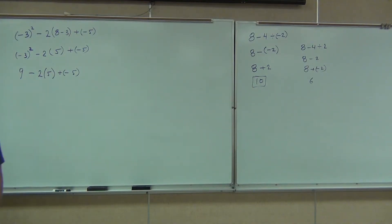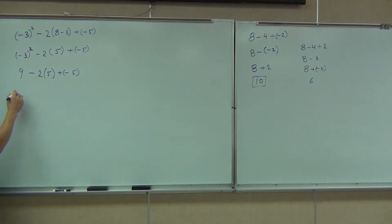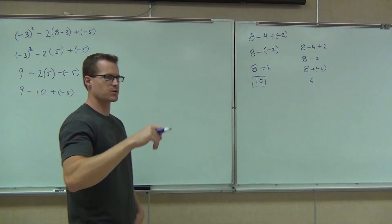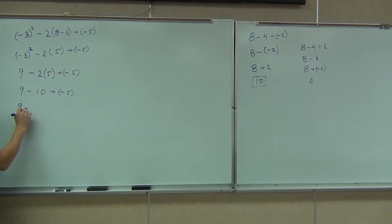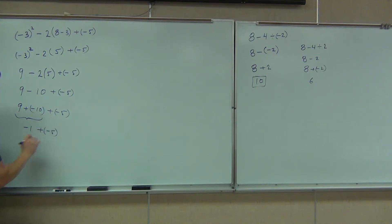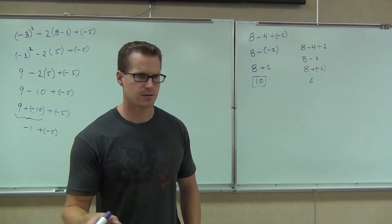Okay, we're on a roll now — you guys are starting to really get this. What's the next thing we do? What does our multiplication give us? 9 plus negative 10 — very good. So we change our signs: minus becomes plus negative. We're going to have 9 plus negative 10 plus negative 5. How much is 9 plus negative 10? Negative 1. Last thing: negative 1 plus negative 5 — same sign, so we add — negative 6.